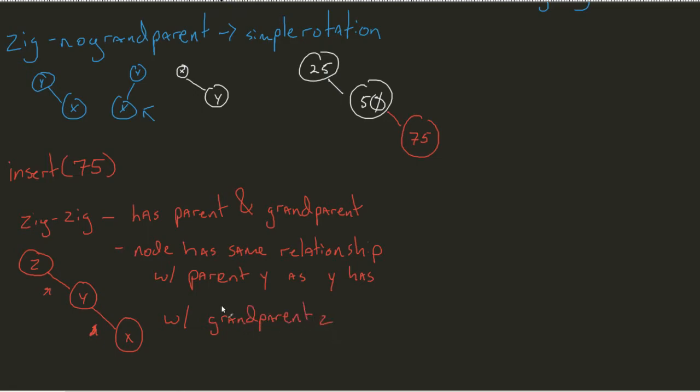Again, this applies in both cases. So I could also have some grandparent with some left child and that having some left child. So I've established what a Zig Zig structure looks like.